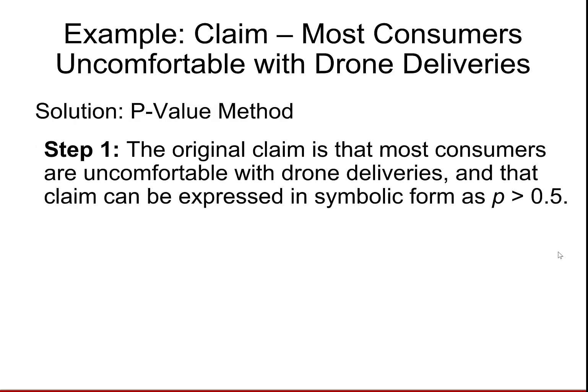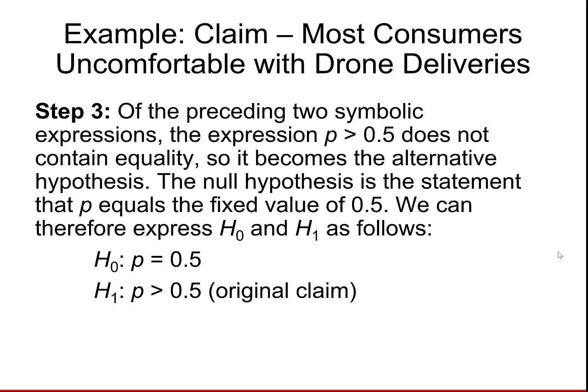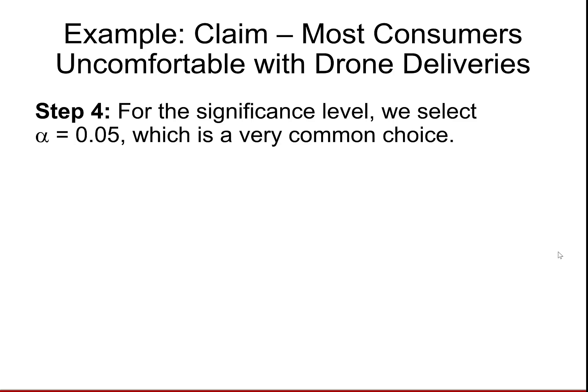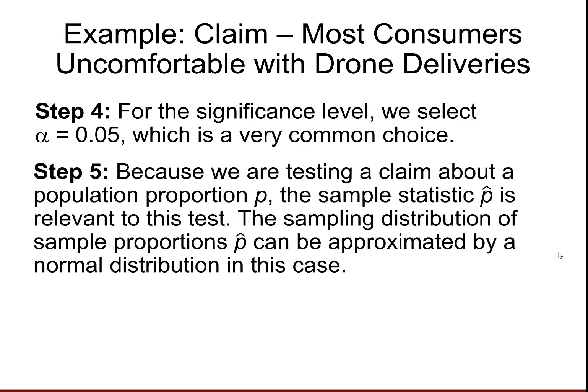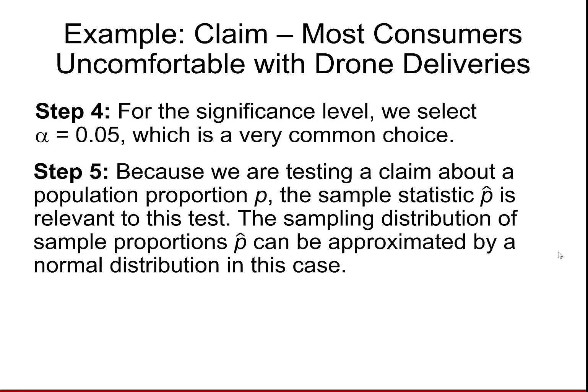For the p-value method, the original claim is that most consumers are uncomfortable with drone deliveries, expressed symbolically as P greater than 0.5. The opposite is P less than or equal to 0.5. Therefore, the null hypothesis is P equals 0.5 and the alternative is P greater than 0.5, which is the original claim. For the significance level, we'll use alpha equal to 0.05. Because we're testing a claim about a population proportion P, the sample statistic P-hat is what we will use, and the sampling distribution of sample proportions can be approximated by a normal distribution.